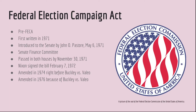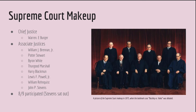During the time in which Buckley v. Vallejo was debated, the Supreme Court makeup wasn't leaning towards any one side. The Chief Justice was Warren E. Burger, who was assisted by Associate Justices William J. Brennan Jr., Potter Stewart, Byron White, Thurgood Marshall, Harry Blackmun, Lewis F. Powell Jr., William Rehnquist, and John P. Stevens.